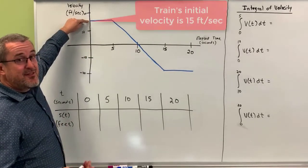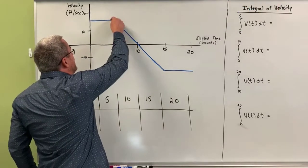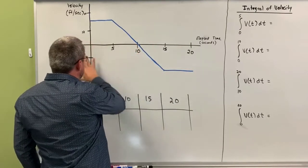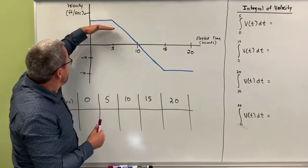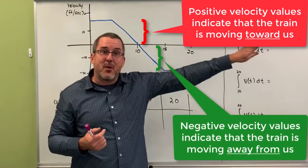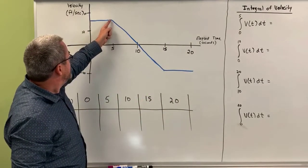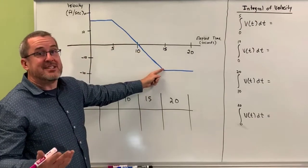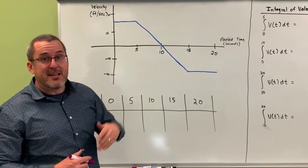The train's velocity is 15 feet per second. The train is traveling at a constant speed of 15 feet per second for five seconds, then the train's velocity steadily decreases to zero. Then the train's velocity actually goes into the negative quantities. What that means is the train has changed directions — positive velocity is when the train is coming towards us, and negative velocity is when the train is going away from us. We have constant velocity, velocity steadily decreasing to zero, the train stopped for an instant, then increasingly negative velocity as the train moves back away from us, and then constant velocity again at 15 feet per second moving away from us.